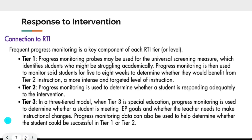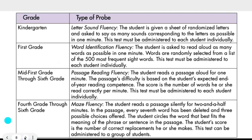Frequent progress monitoring is a key component across all tiers. In tier one, progress monitoring probes can be used for universal screening to identify students who might be struggling. Use progress monitoring consistently for five to eight weeks to determine if a student would benefit from tier two. In tier two, monitoring determines whether the student is responding to extra help. In tier three, it helps determine if students are meeting IEP goals, whether instructional changes are needed, and whether students could be moved back to tier one or two.